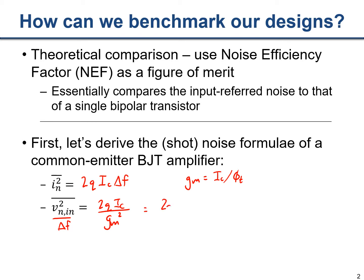Substituting g_m = I_C/φ_T, we get the input-referred noise spectral density as 2Q·φ_T / I_C, which equals 2KT·φ_T / I_C. So for a bipolar transistor, the input-referred noise is inversely proportional to the collector current.